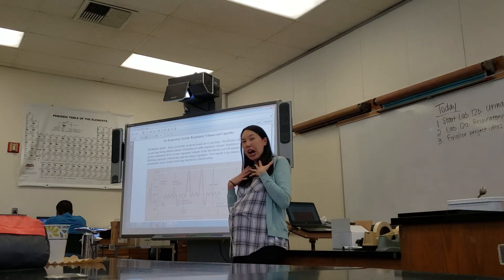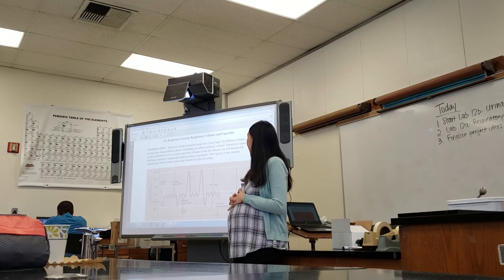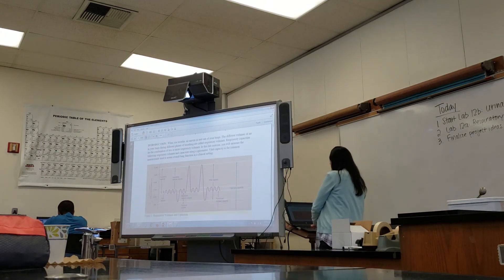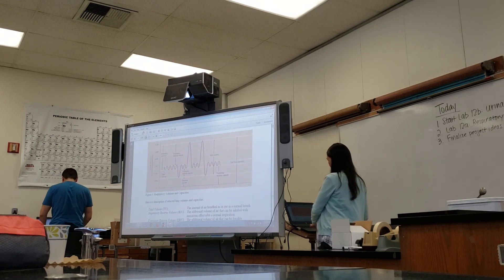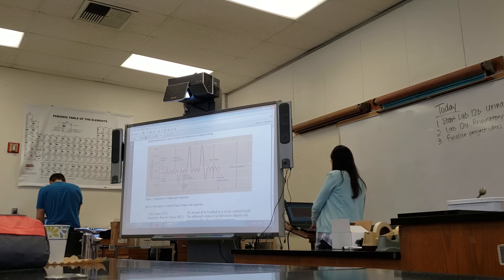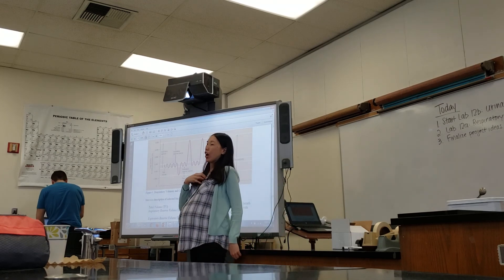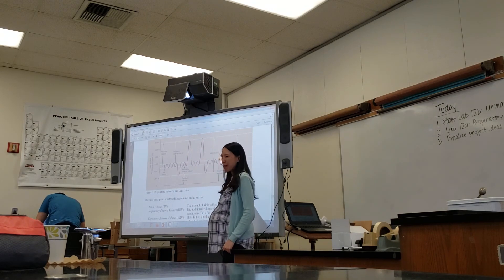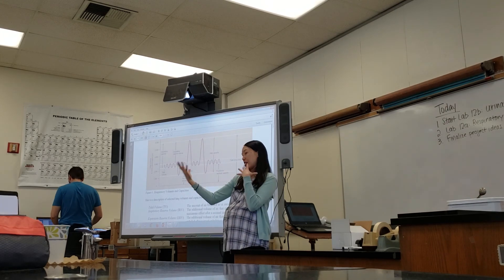You guys are going to set up and figure out how healthy your lungs are. What we're looking at in the respiratory system today is something called respiratory volume and capacity. You can find this on page 79 of your lab manual. We're looking at how much air you can breathe in and out. Volume is just the amount of air you can take in and out of your lungs. Capacity is just the sum of the volumes.